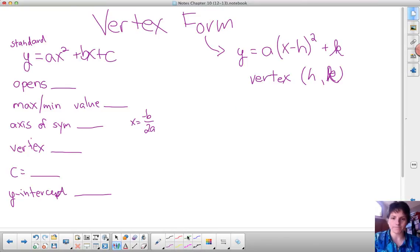So if I had given you a problem: y equals 3 times the quantity x minus 4 squared minus 2.